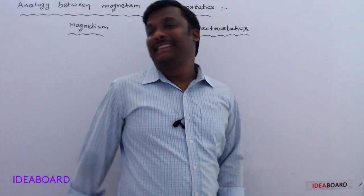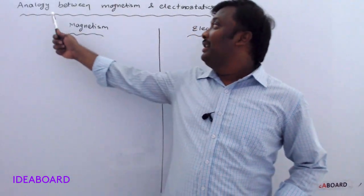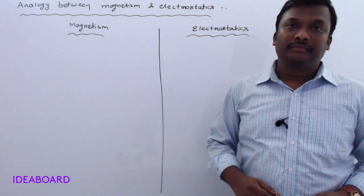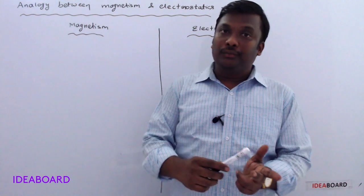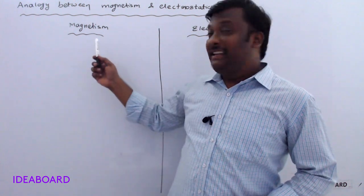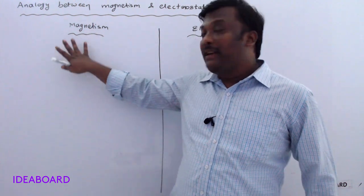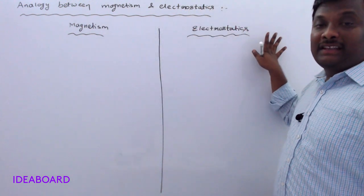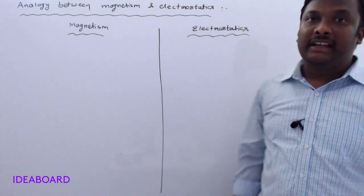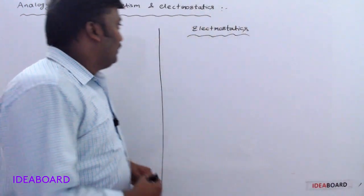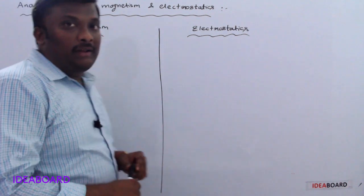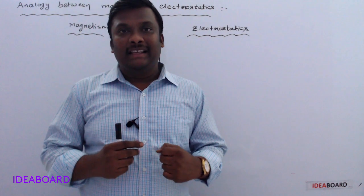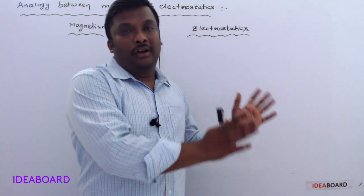Hi students, now we are discussing about the analogy between magnetism and electrostatics. Analogy means related to — it indicates that in magnetism some physical quantities are related with another physical quantities in electrostatics. So in this particular concept, everything we have learned in magnetism is interrelated with electrostatics.